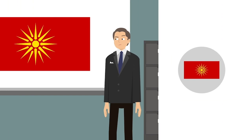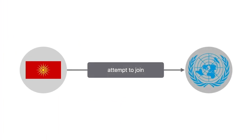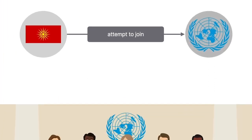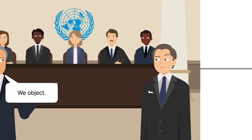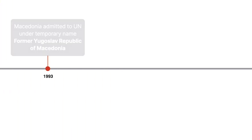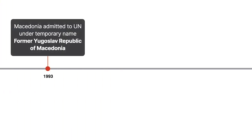When Macedonia attempted to join the UN, Greece objected due to Macedonia's name. However, in 1993, Macedonia was eventually admitted to the UN under the temporary name Former Yugoslav Republic of Macedonia.